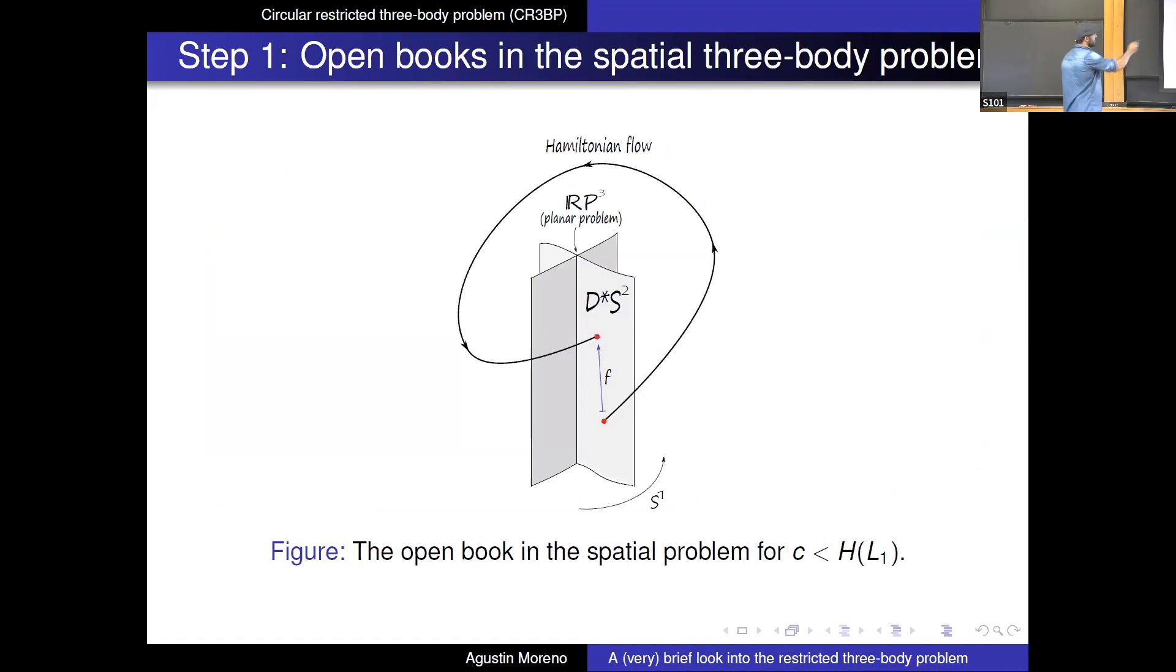So this is a picture, the invariant self-disciplinar problem is a copy of RP3 sitting inside a unit contention bundle of S3. The page of the open book is a copy of D stars 2, and you know, you have the dynamics, so you have associated with the term half X, which you want to study.